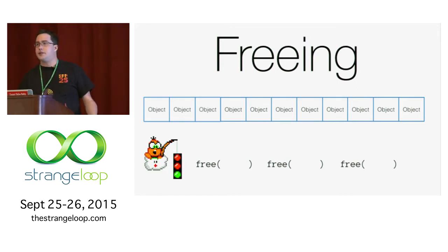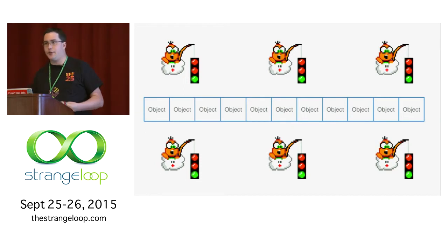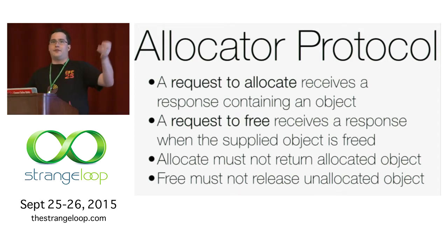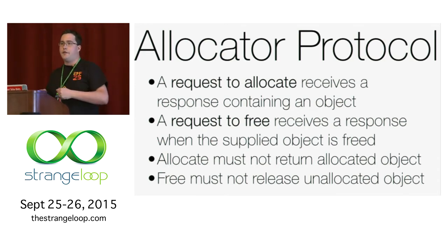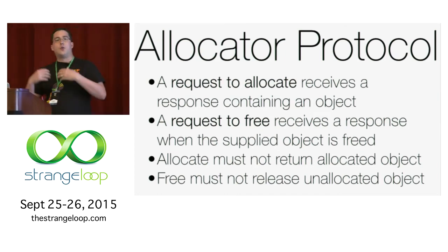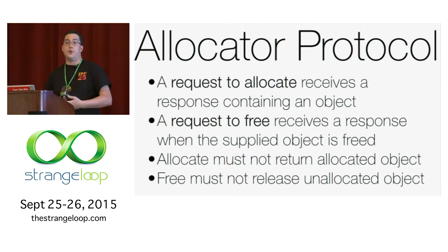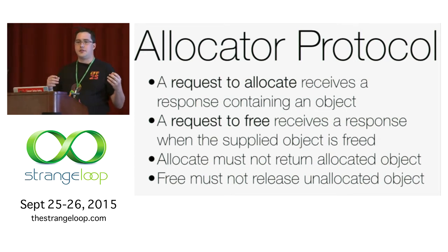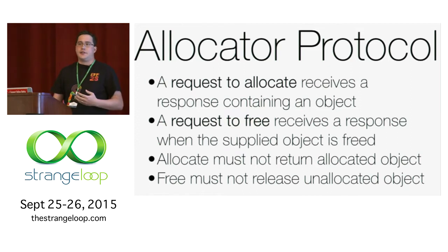We're looking at this from a single-process perspective. What happens if we add concurrency into the mix? The question we need to answer is: how do we reason about the correctness of our allocator in the face of concurrency? Something really useful to do is to define a protocol. Even though we're not defining message-passing semantics, we can think of our allocator as a protocol where we have requests for objects that receive responses containing objects, and requests to free objects back — those free requests are responded to when the free completes. A request comes before a response — that's an important constraint.